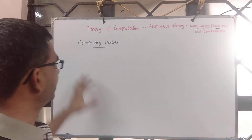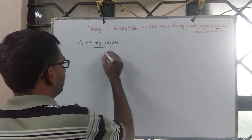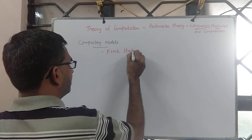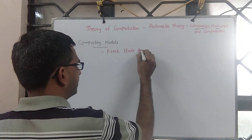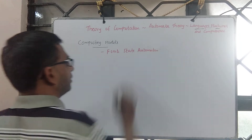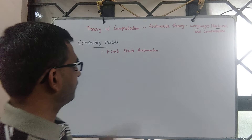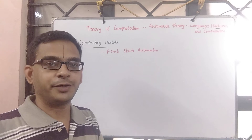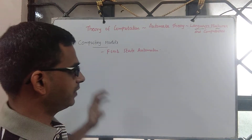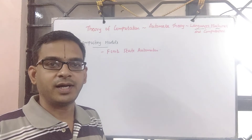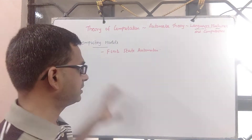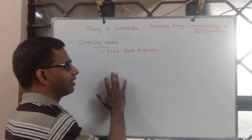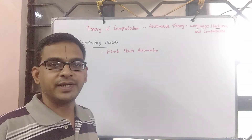We will start with finite state machines. As part of computing models, the very first model is finite state machine or finite state automaton. To understand the finite state automaton and subsequently pushdown automaton, computing machine and so on, we need a framework and certain notation and preliminaries to understand how this machine works. Essentially we are trying to understand how a machine computes a certain task.